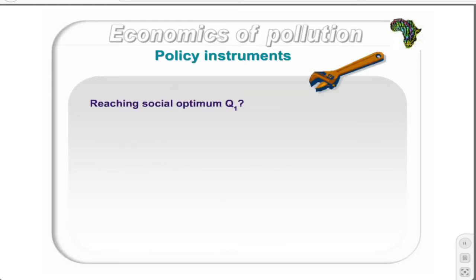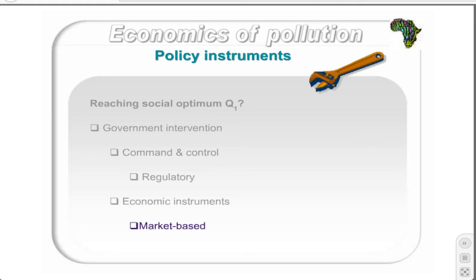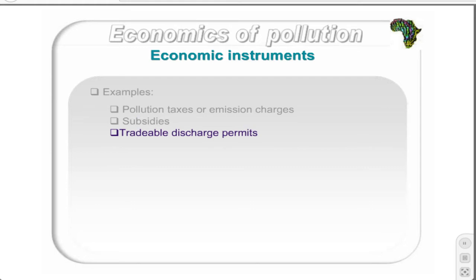Policy instruments address the issue of how to bridge the gap between the private and social optimum. Government intervention is necessary to facilitate the shift towards the social optimum, as the market is not functioning efficiently. Two types of interventions are possible. First, command and control intervention is regulatory in nature and is pictured as the big stick of correction. The second intervention type is economic instruments, which are market-based and likened to a carrot dangled in front of a donkey to steer them in the right direction. Examples include pollution taxes, subsidies, and tradable discharge permits.